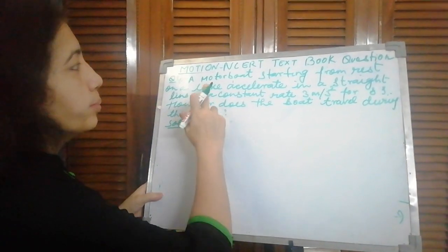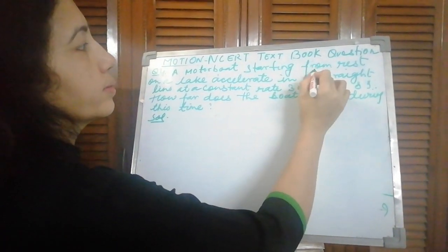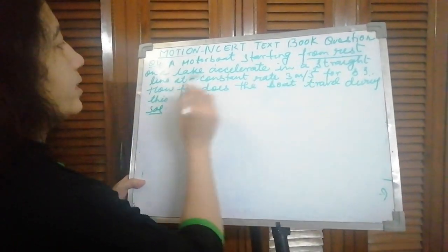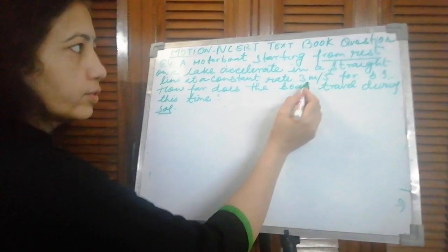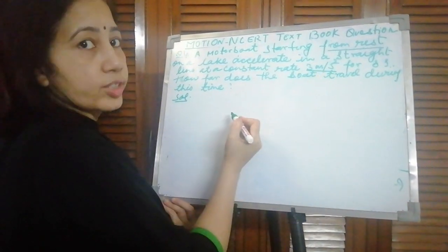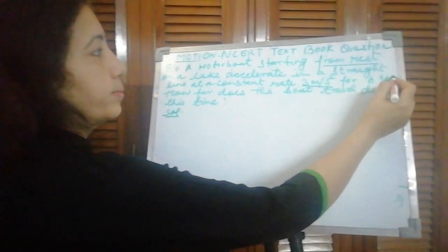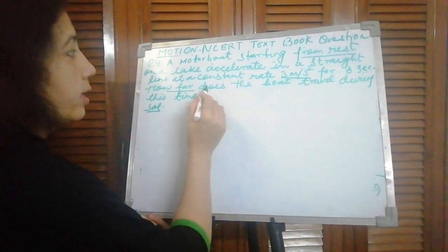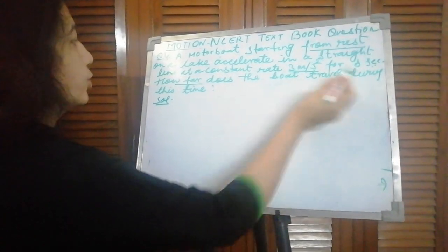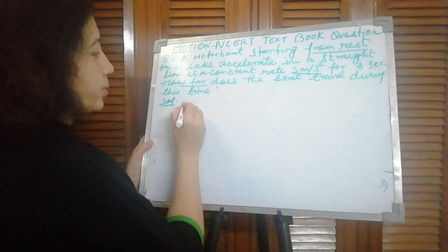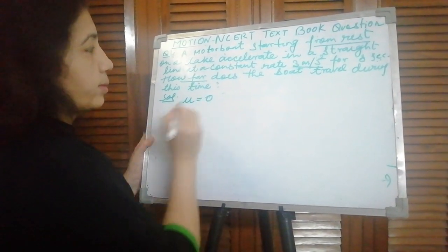Next, fourth question is: a motorboat starting from rest on a lake accelerates in a straight line at a constant rate of 3 meter per second square for 8 seconds. So a boat is starting from rest. Wherever the word rest comes, there u becomes zero.